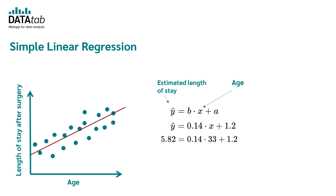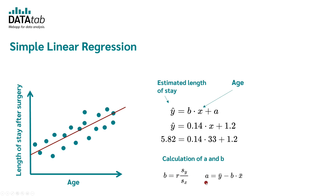How do you calculate the slope b and the intercept a? Usually you just use a statistics program like Datatab. In the case of a simple linear regression, it is also quite simple to calculate by hand. The slope b results from the correlation of the two variables times the standard deviation of the length of stay after surgery divided by the standard deviation of age. The intercept a is obtained by calculating the mean value of the length of stay minus the slope times the mean value of age.